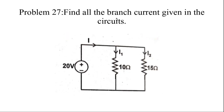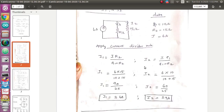Next problem: find all the branch currents in the circuit. Here you have to find i1, i2, and also i (the total current), but you are not given the total current value — instead you are given the voltage. This is simpler, because the voltage across the 10 ohm resistor is also 20 volt and the voltage across the 15 ohm resistor is also 20 volt, since these two resistors are connected in parallel and the voltage across all parallel resistors equals the source voltage.